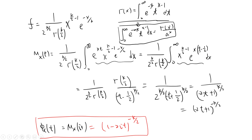So a equals 1/2 minus t, which is negative t plus 1/2, giving a^(k/2). There is also a gamma(k/2), so these two gamma terms cancel. Since it's a plus sign, the answer will be 1 over (1 minus 2t)^(k/2), or equivalently (-2t + 1)^(-k/2).